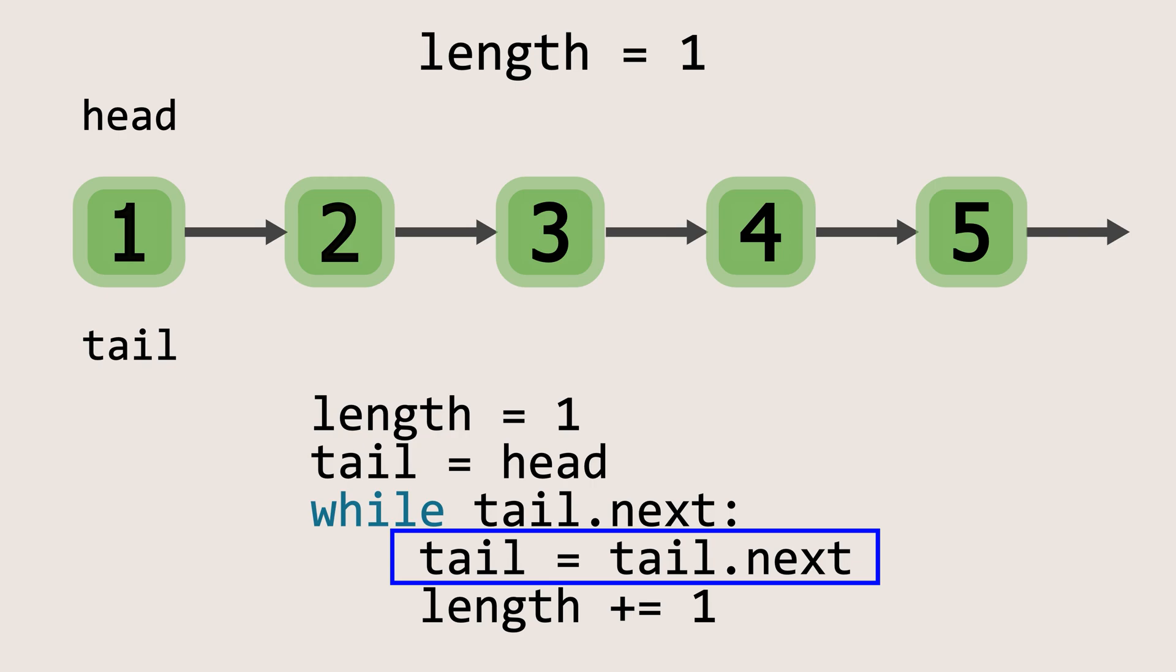Inside the loop, we update tail to its next element and increment the length variable by 1, and this process will continue until we have reached the end of the list.